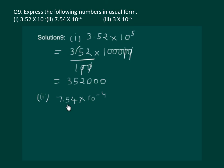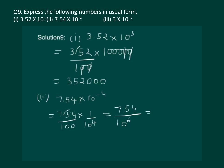Let us start with the second part. We can rewrite it as 7.54 multiplied by 1 by 10 power 4. Let us solve it further, which comes out to be 754 whole divided by 10 to the power of 6. And that means we will have to shift the decimal 6 places and it will come to be 0.000754.